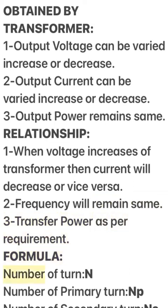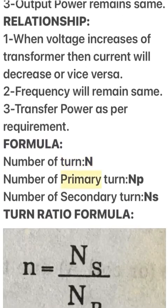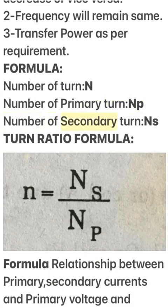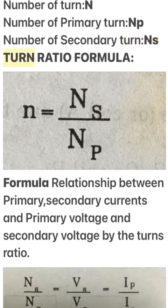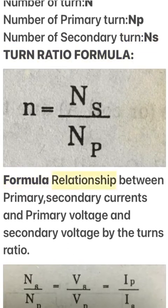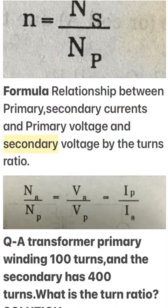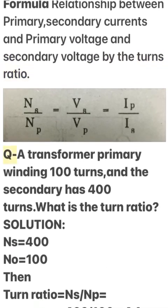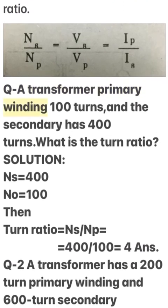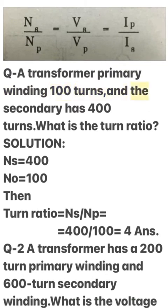Transformer Formulas — Turn Ratio: Np = number of primary turns, Ns = number of secondary turns. The turn ratio formula relates primary and secondary currents and voltages. Example Q: A transformer has a primary winding of 100 turns and secondary of 400 turns. What is the turn ratio? Solution: Turn ratio = Ns / Np = 400 / 100 = 4.